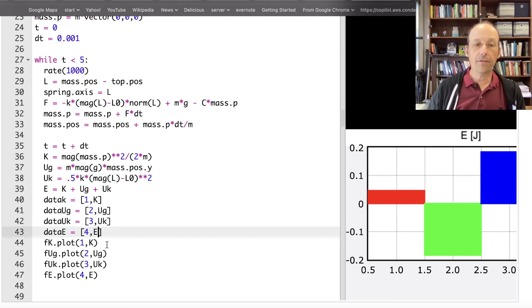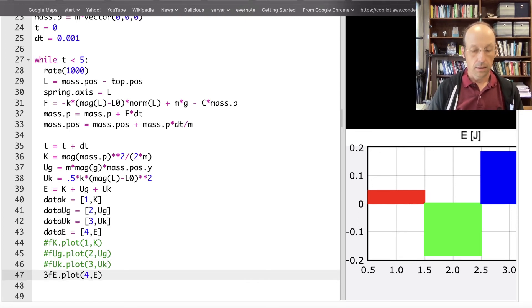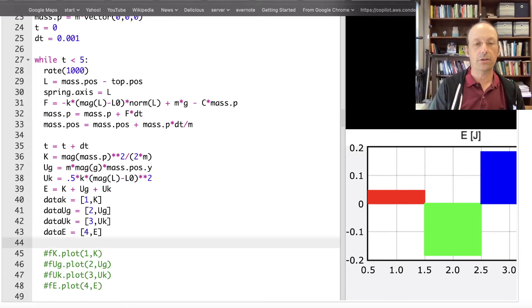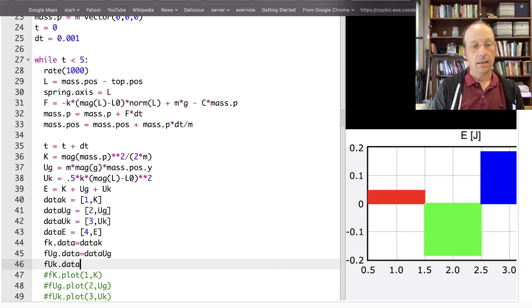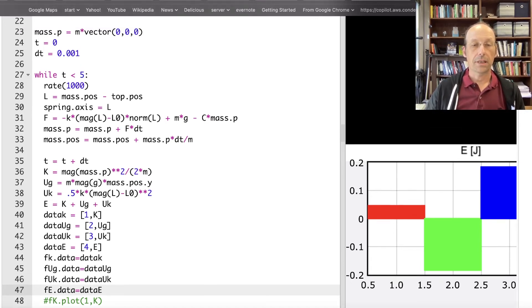now for the plot I'm not even going to do that I'm going to I'm going to get rid of all these things let's just comment them out so I'll leave them there in case you want to go back and go the other way I wouldn't really have students do this because it doesn't really give that much benefit here so I'm going to say fk dot data equals data k f ug dot data equals data ug f uk dot data equals data uk and fe dot data equals data e I think this will work maybe